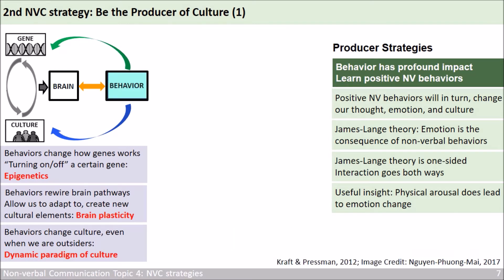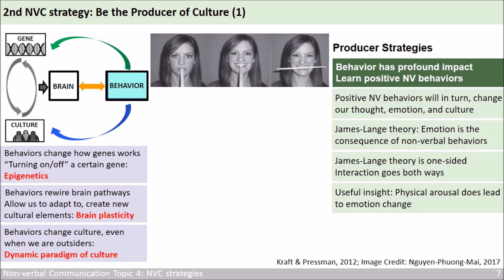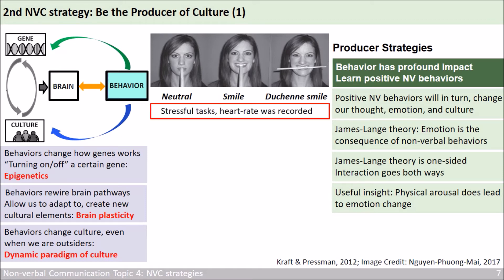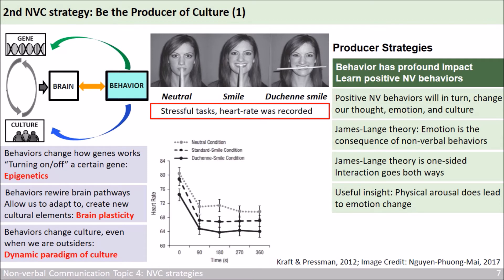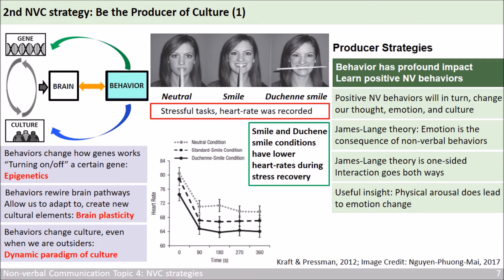To apply this in everyday life, here is an interesting study. Participants were divided into three groups: the first with a chopstick in their mouth to show a neutral facial expression; the second group activated the zygomaticus major muscles to resemble a smile; and the third group kept the chopstick horizontally, creating a very bright smile called the Duchenne smile. These people then conducted some stressful tasks, and their heart rate was recorded. The finding suggests that the smile and Duchenne smile conditions have lower heart rates during stress recovery — the bigger the smile, the lower the heart rate.